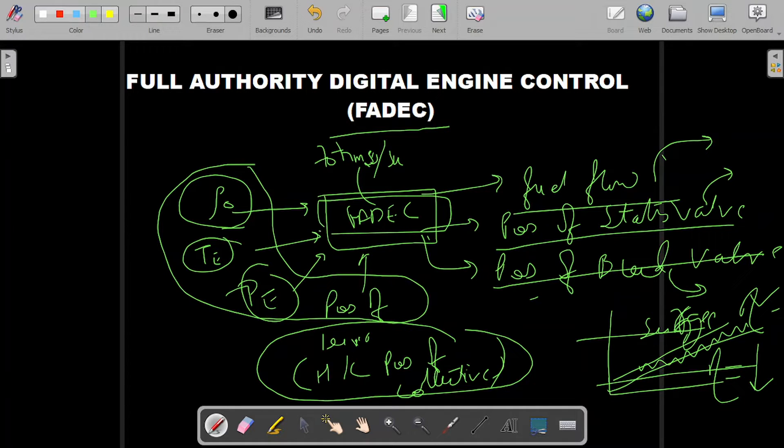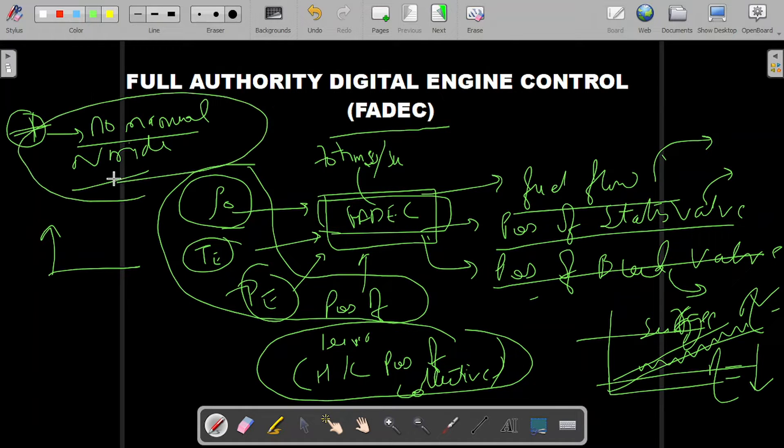One disadvantage or peculiarity is that it has no manual override. The pilot has no control over the amount of fuel flow going inside. In a case of crisis, if he's flying a helicopter and needs more thrust, he'll raise his collective stick up, but the amount of fuel going inside the engine will be regulated by FADEC. There is no manual override. The thrust and efficiency will be decided by FADEC, not by the pilot. This is one drawback.